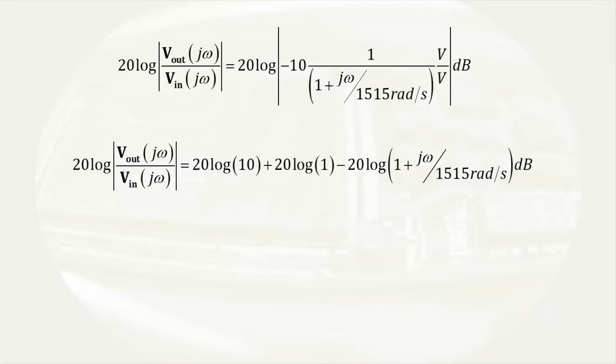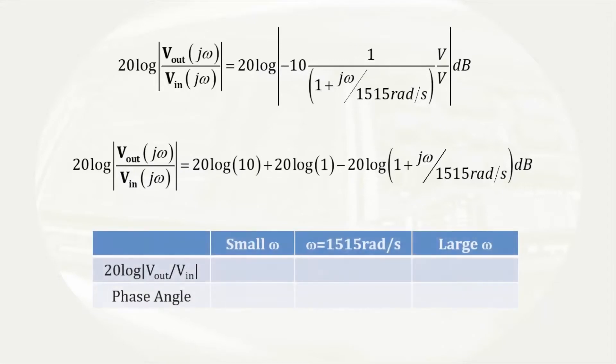Performing the same types of limits as we did previously, we see that for small omega, the only term that is non-zero is 20 times the log of 10. That results in a decibel gain of 20 decibels. The phase angle is still 180 degrees as it was before.